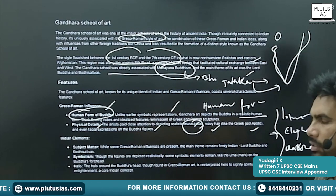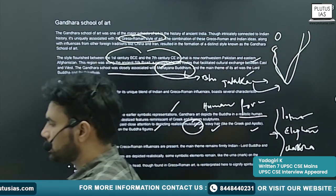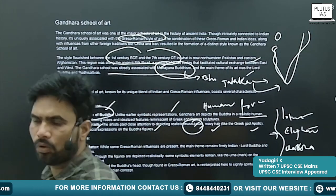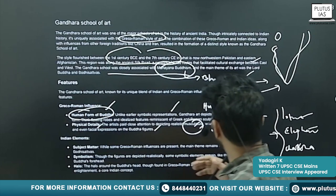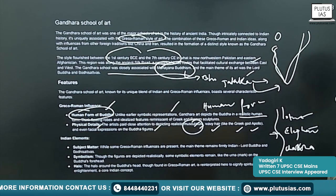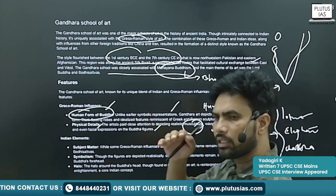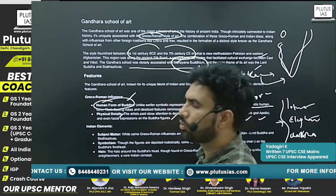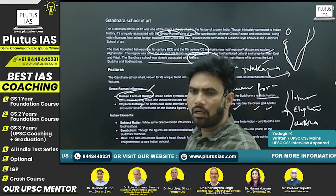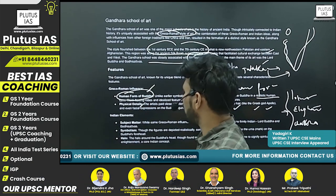The sun god in the Greek tradition is known as Apollo. You will see wavy or curly hair for that god, and the same is given to the sculpture of Buddha also.